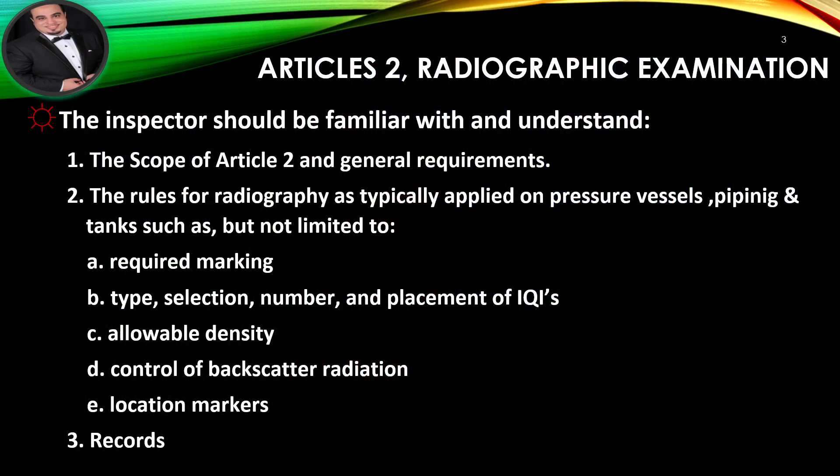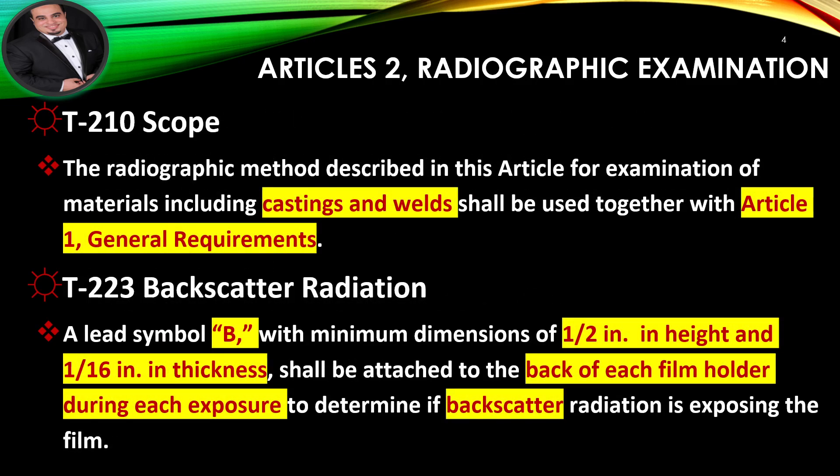Article 2 — Radiographic Examination. The inspector should be familiar with and understand the scope of Article 2 and general requirements, including the rules for radiography as typically applied on pressure vessels, pipe, and LNG tanks, such as but not limited to: required marking; type, selection, number and placement of IQIs; allowable density; control of backscatter radiation; location markers; and records. The radiographic method described in this article for examination of materials including castings and welds shall be used together with Article 1, General Requirements.